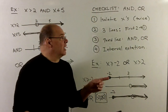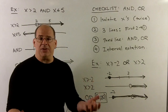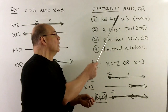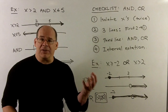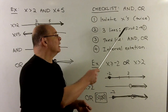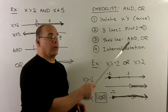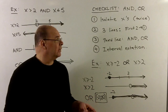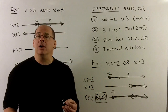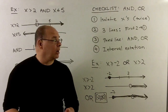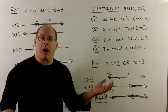Now let's put this to a checklist for compound inequalities. We have two linear inequalities joined by AND or OR. First, solve each linear inequality to isolate x — they may not already be solved. Then draw three number lines: the first two from each isolated inequality, and the third showing the result — AND means take the part in common, OR means take everything together. Finally, give your answer in interval notation.